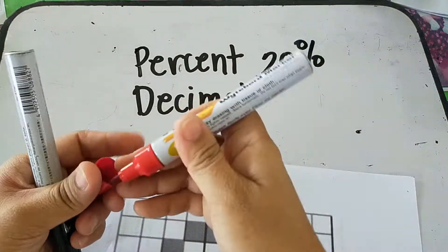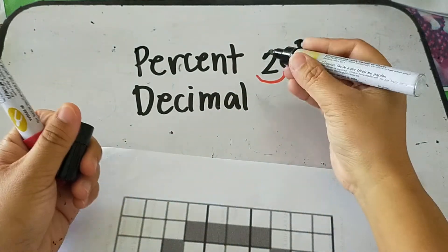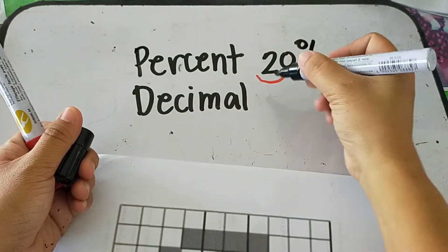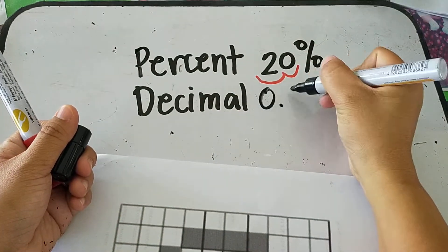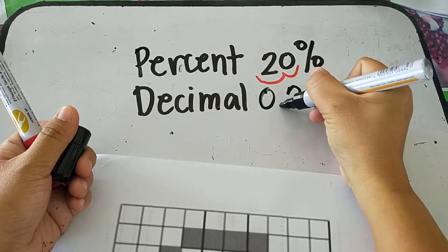1, 2. Then in decimal form, 20% is written as 0.20 or 20 hundredths.